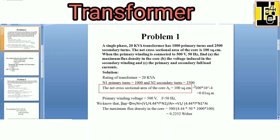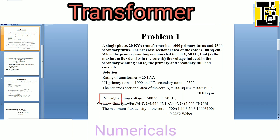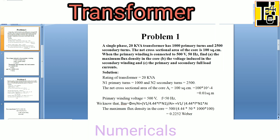The net cross sectional area of the core is AI, given value is 100 square centimeter. We need to convert it to square meter by multiplying by 10 raised to minus 4, giving us 0.01 square meter. The primary winding voltage is 500 volt at 50 hertz frequency. Let us solve for the first bit, the maximum flux density in the core, that is Bm.